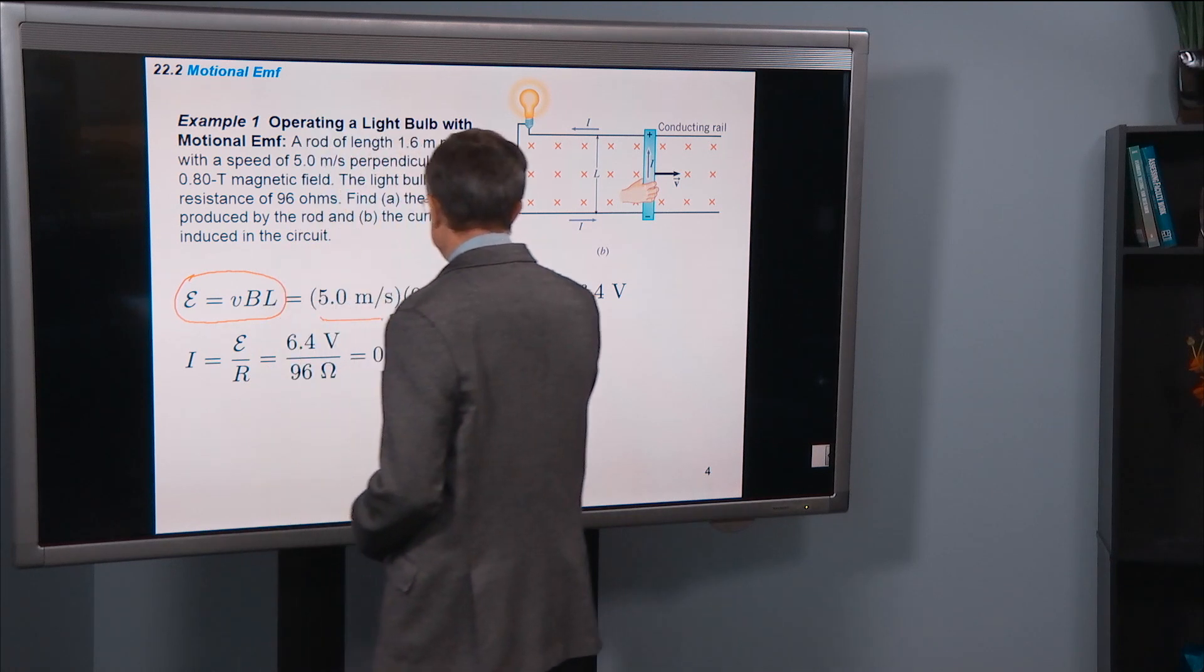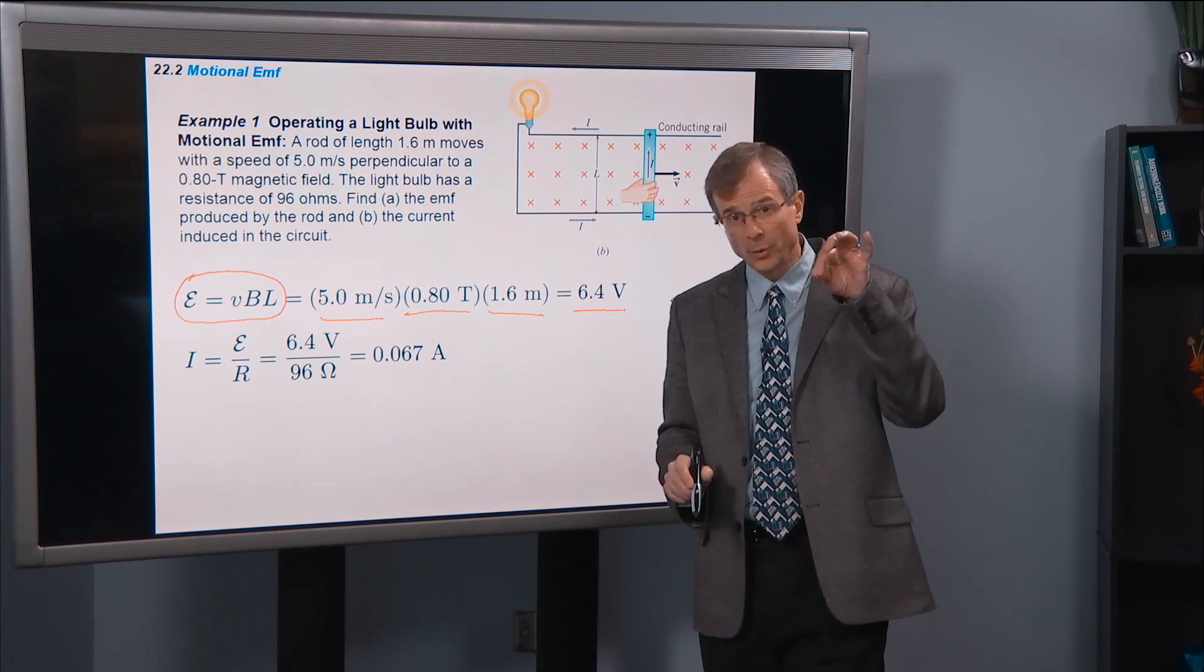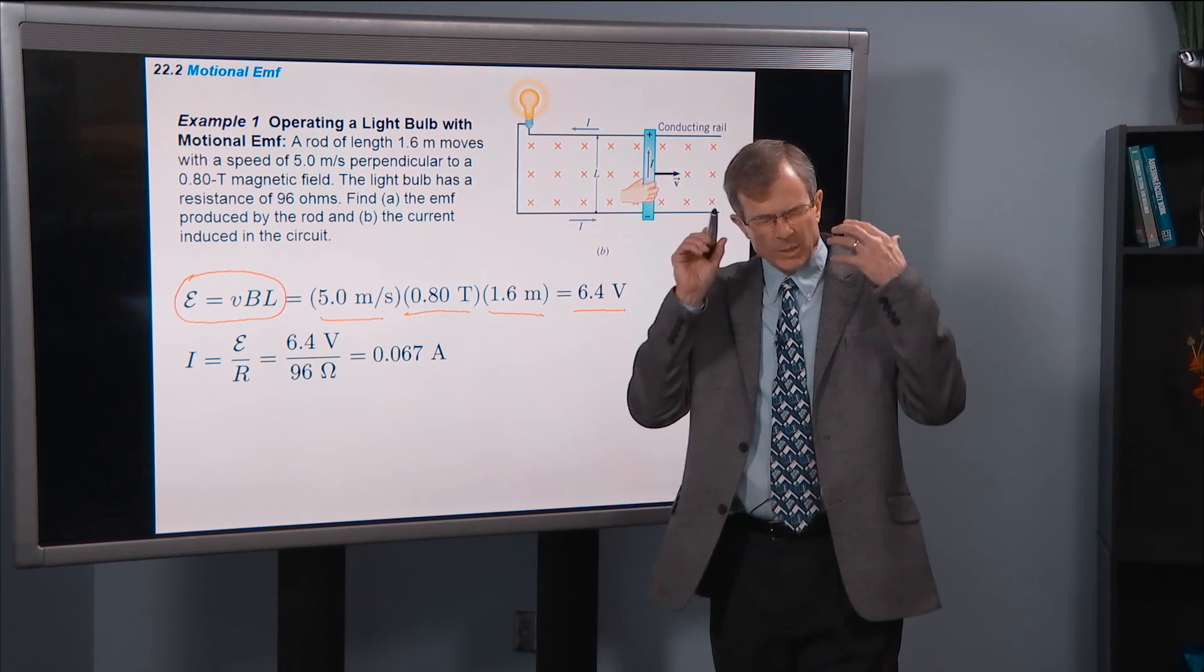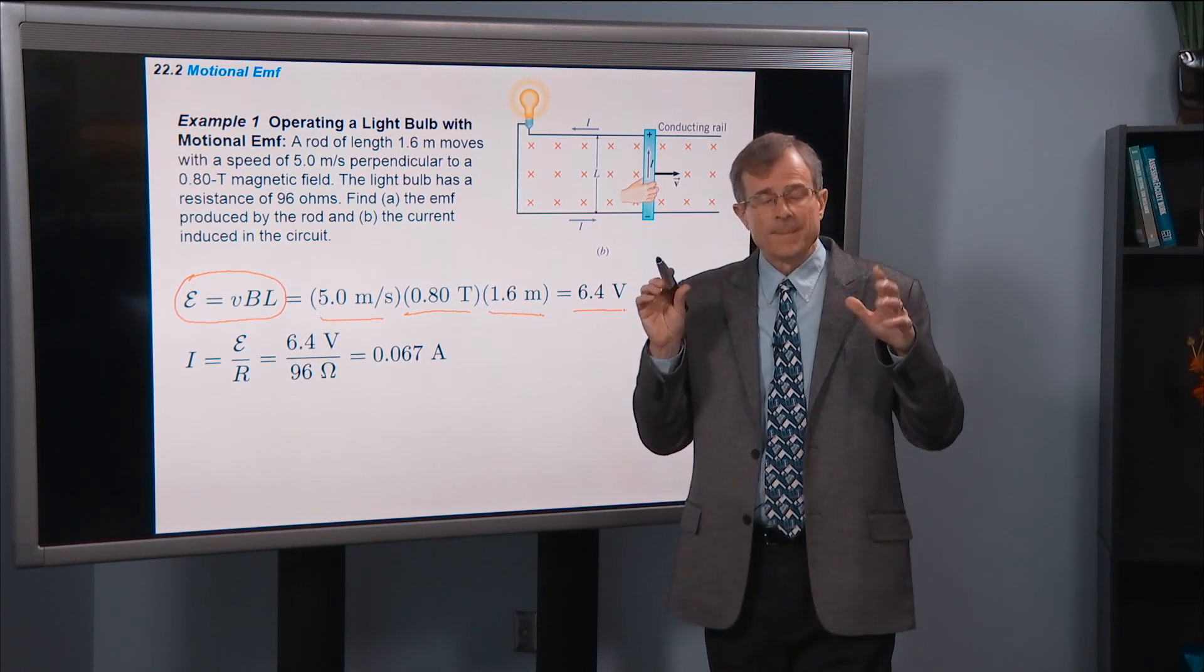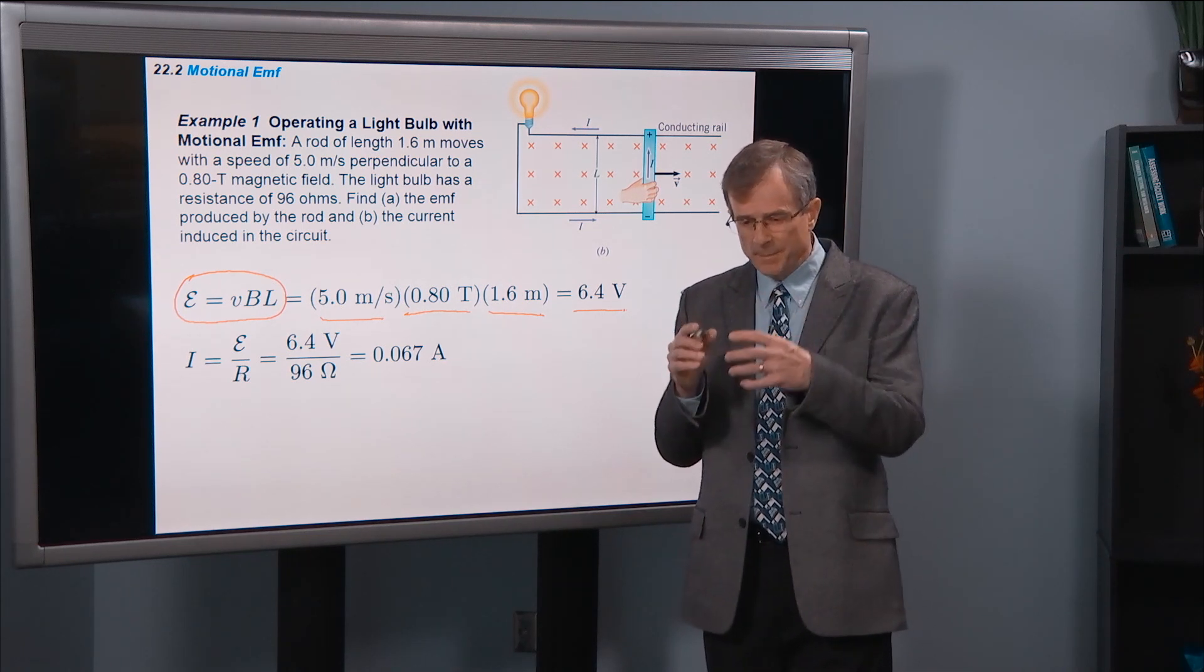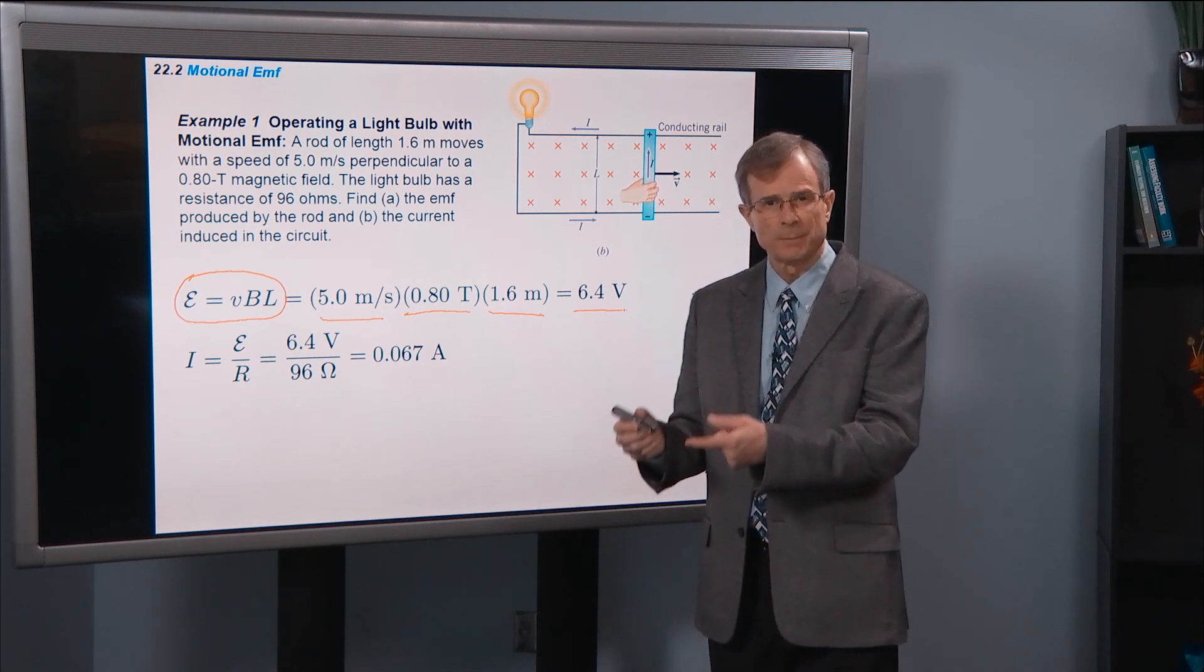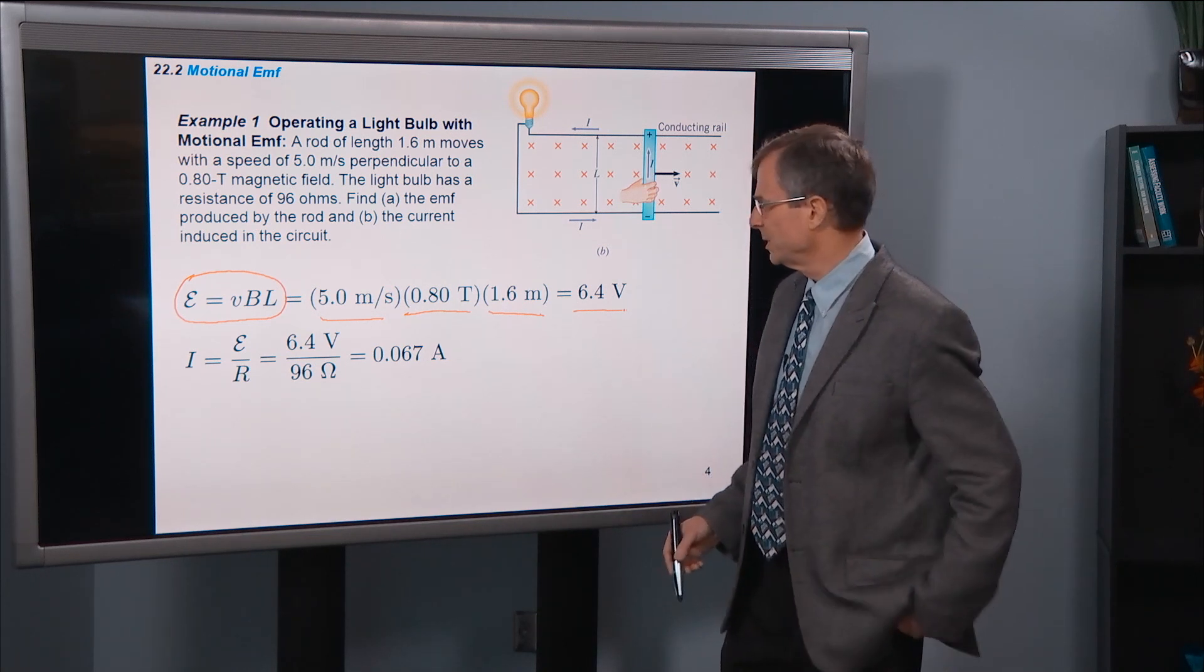So that's this. We know v, we know B, we know L. We multiply them together and we get a 6.4 volt EMF. Now what's an EMF? You might be saying, an EMF is just a voltage.